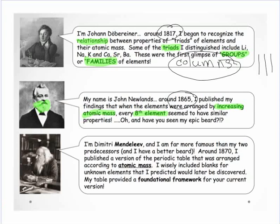The most well-known person in this list is Mendeleev — and talk about beards, look at that one. Around 1870, he arranged the periodic table completely according to atomic mass. Newlands just saw the pattern that seemed to cycle around, whereas Mendeleev actually arranged it, and this provided the foundation.